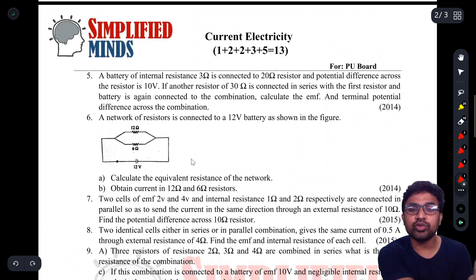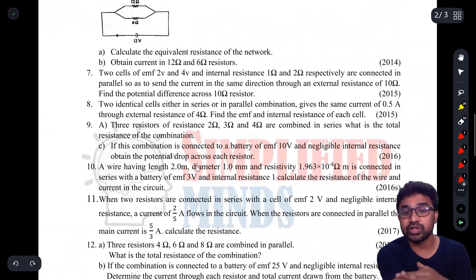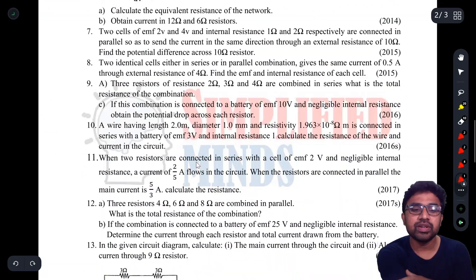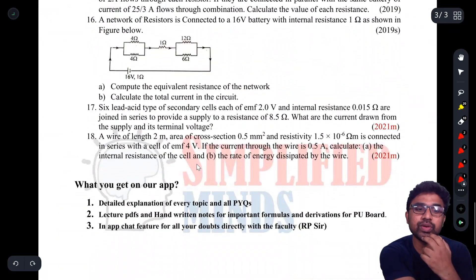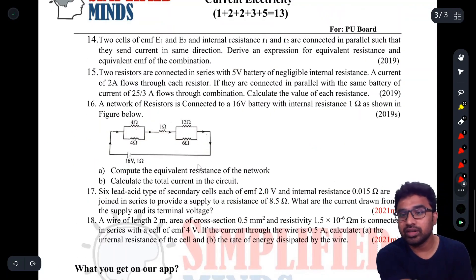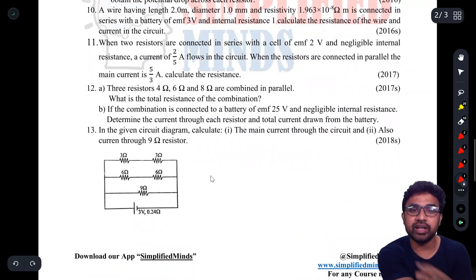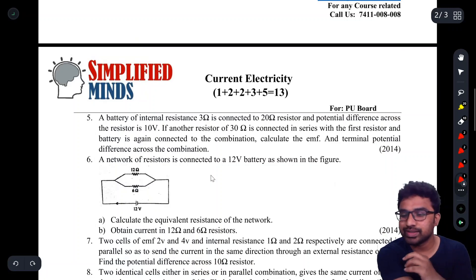Five markers - you can get numericals. Check all the numericals, approximately 18 numericals are given in this PDF. This is very simple.